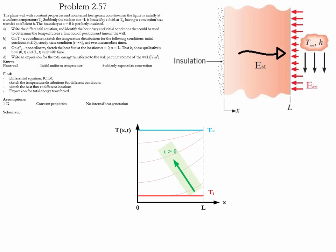As time increases, the side of the wall affected by convection will have the most dramatic change. The temperature will be increasing until it eventually reaches T∞. As time increases, the wall will tend to reach T∞, which is the surrounding temperature. Once steady state is reached, the temperature of the whole wall will equal T∞.